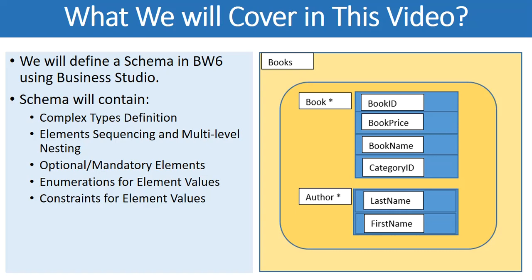We will define a schema in BW6 using Business Studio called the books schema. This schema will contain books as the root element, and the books element will contain multiple books as an array. Every book will have a book ID as integer, a book price as float, a book name as string, and an enumeration for category ID so that values are constrained within a provided list. We will also have multiple levels of nesting with an authors complex type containing first name and last name as sub-elements.